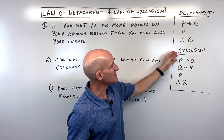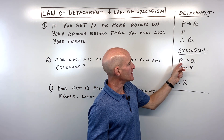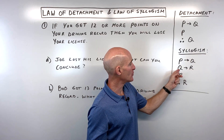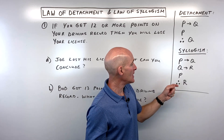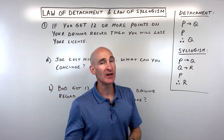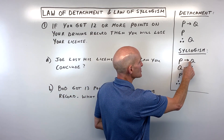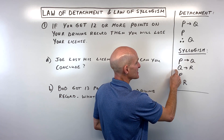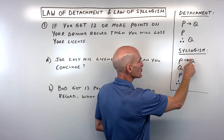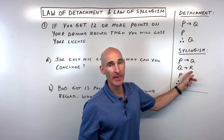So that's the law of detachment. For the law of syllogism, you've got three quantities. If p then q — let's say that's a true conditional statement — and if q then r, let's say that's also a true conditional statement. If p happens, therefore r will happen. You can think of it like the transitive property, meaning p causes q, and where this one ends up, the next statement starts off with that same quantity: if q then r. So through this domino effect, if p happens, r will happen.